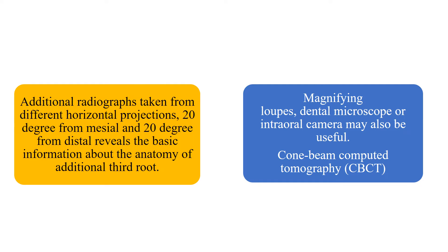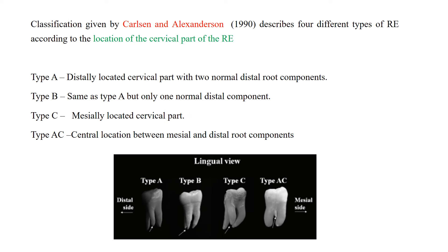To detect the additional root, take radiographs from different horizontal angles — 20-degree mesial or 20-degree distal angulations. During root canal treatment of teeth with radix, use magnifying loupes, microscopes, or intraoral cameras to enhance your chances of success. If you still cannot diagnose an additional root radiographically, CBCT can be used.